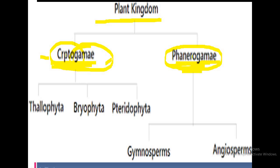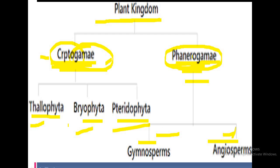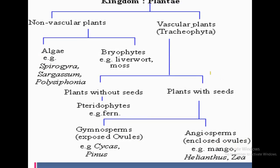Cryptogams are also called the lower group of plant kingdom and phanerogams the higher group. Cryptogams are divided into three categories: Thallophyta, Bryophyta, and Pteridophyta. Phanerogams are divided into two categories: Gymnosperms and Angiosperms. Angiosperms are further classified into two sub-levels: Monocots and Dicots.